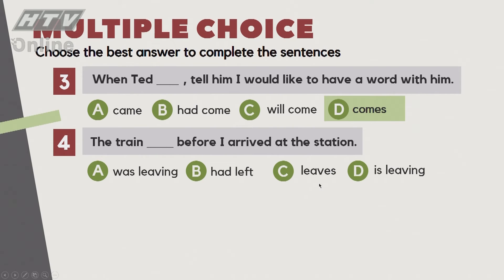Câu số 4: 'The train ___ before I arrive at the station.' Ở đây có 2 hành động xảy ra trước và sau. Trước khi tôi đến nhà ga thì tàu đã chạy mất rồi. Đáp án là B - past perfect: 'The train had left before I arrive at the station.'